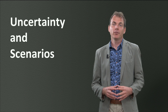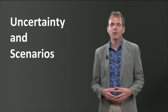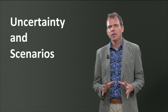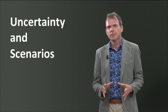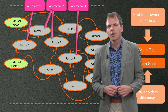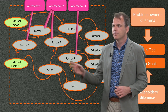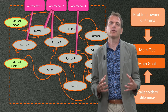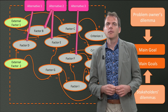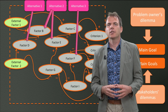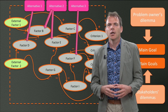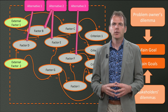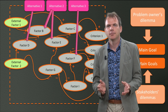Can you remember from the video on causal diagramming that there are always factors in your system that no one can influence? Here they are, in green. We call them external factors, meaning they are factors in your system, but they have an influence on your system without you having the possibility to change them.